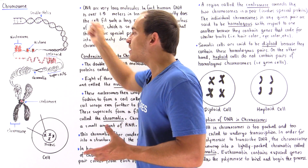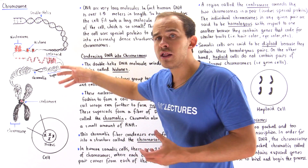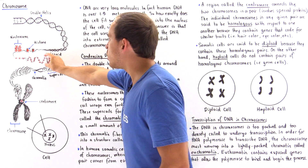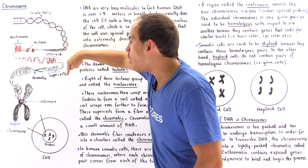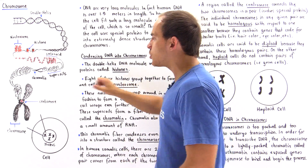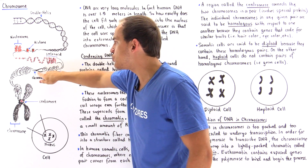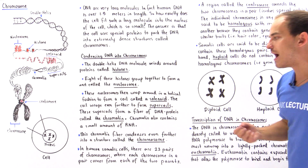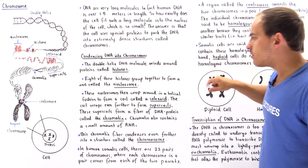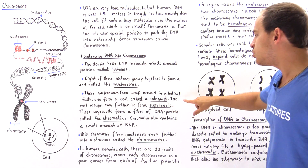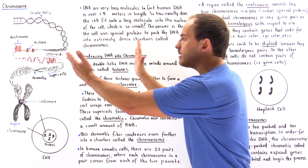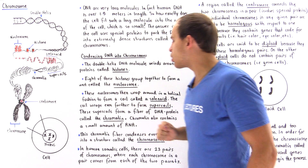That process continues and we take those solenoids and coil them even further to form super coils, as shown in the diagram. Each single solenoid coils even further. When we take the super coils and stack them on top of one another, we form a single fiber known as the chromatin fiber, or simply our chromatin. The nucleosomes wrap helically into the solenoid, the solenoid wraps into super coils, and those super coils condense to form the chromatin fiber.